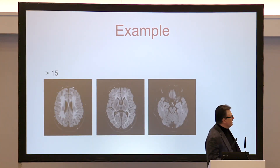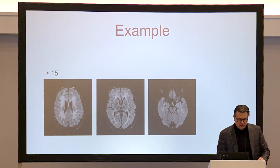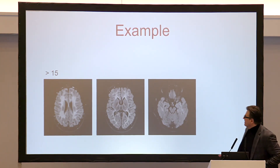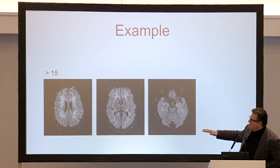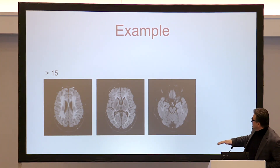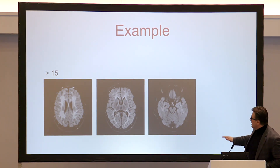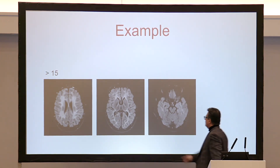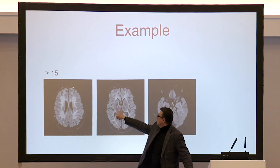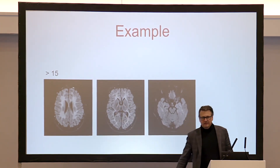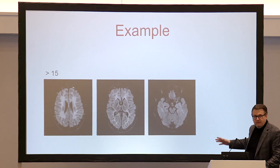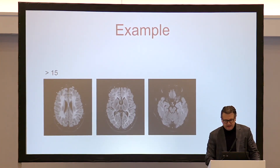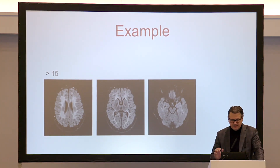And then here's a child with a score greater than 15 — either 17 or 19 — with lots of white matter involvement in the front, the back, and in various cuts: corticospinal tracts, temporal lobes. A very high score.